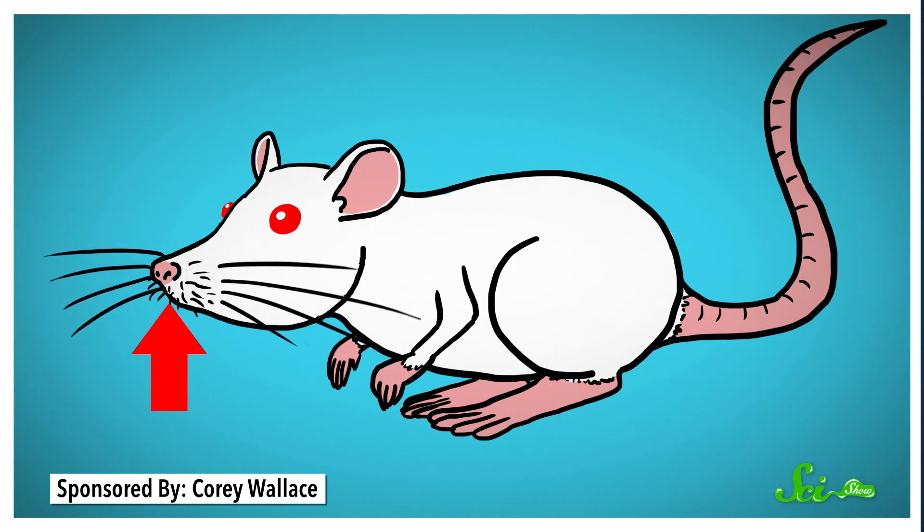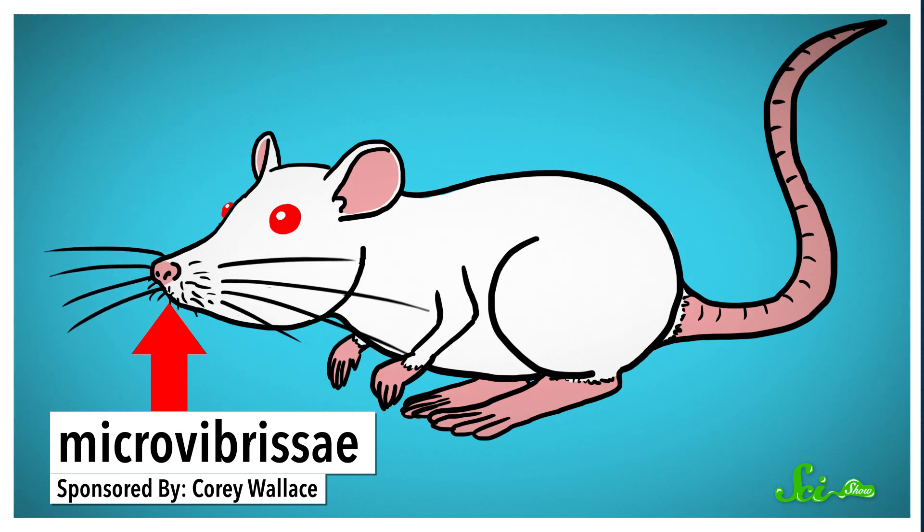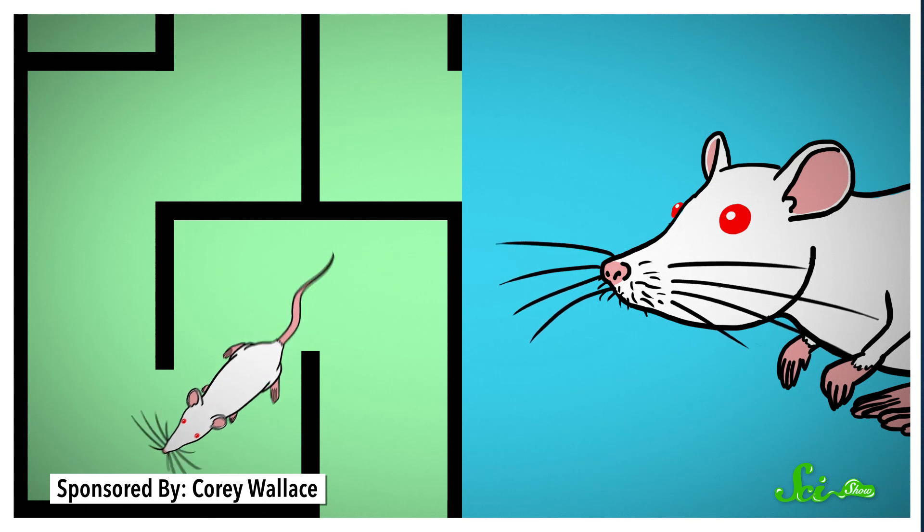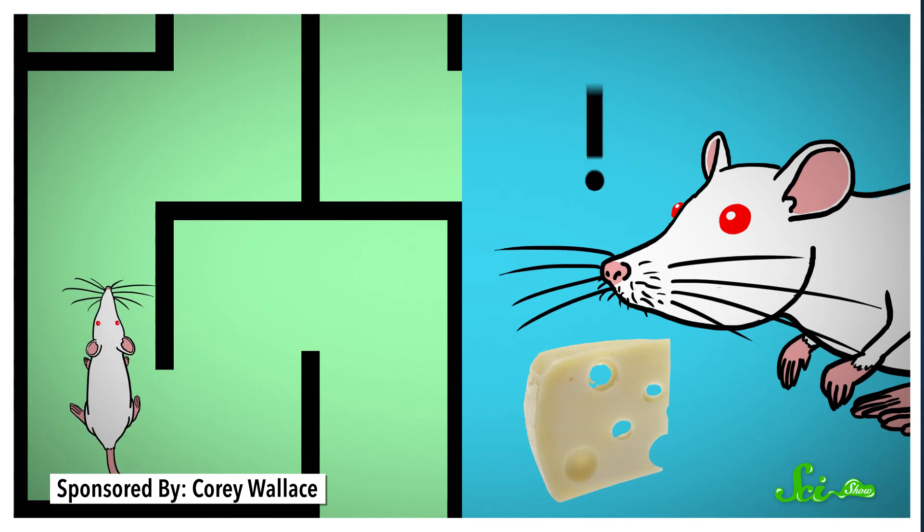But there are also shorter, stubbier whiskers, usually right under the nose, called microvibrissae. Many animals, like rats or mice, have both kinds. And in those creatures, it's thought that the big ones are used for spatial tasks, while the little ones are more important for recognizing certain objects.